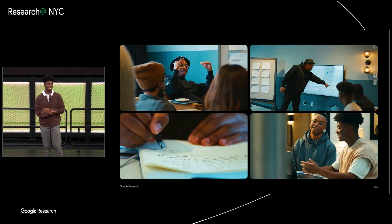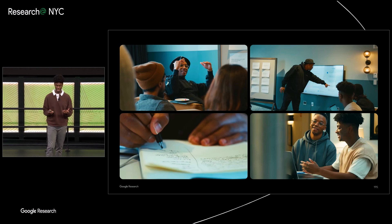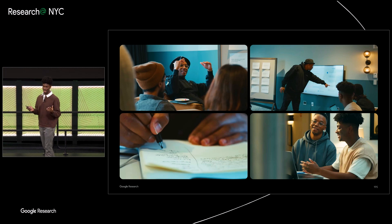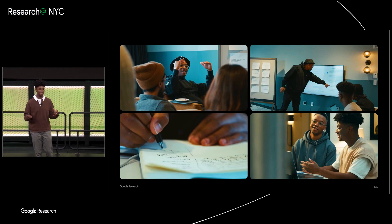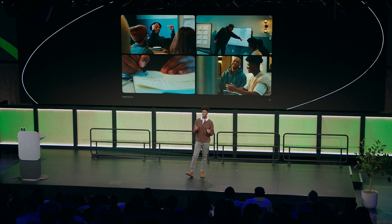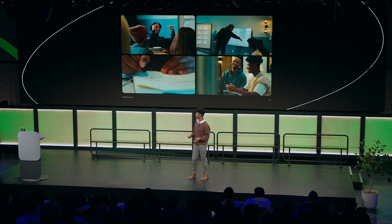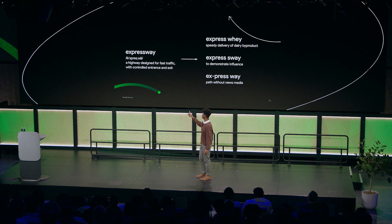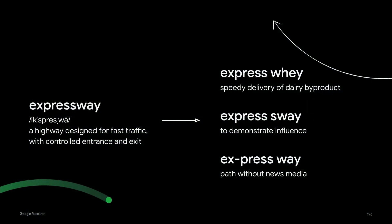So we started by spending some time with Lupe to learn about his creative process. What we found is that Lupe has this really special way of deconstructing language and then reassembling it in all sorts of novel and innovative ways. Some of his techniques, like simile and metaphor, draw from the canon of traditional literary devices, but many of his techniques were entirely unique.